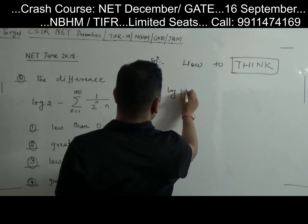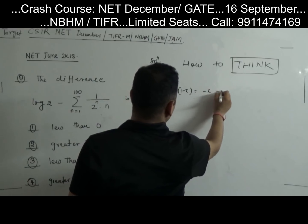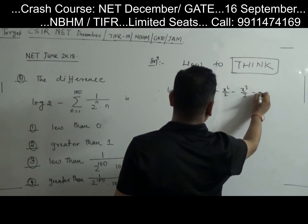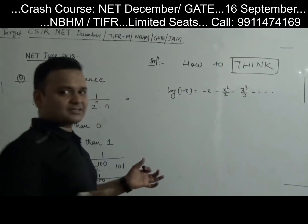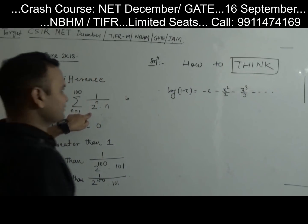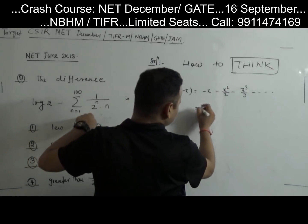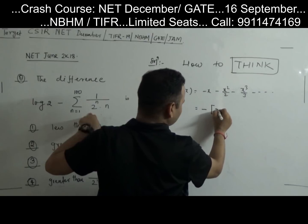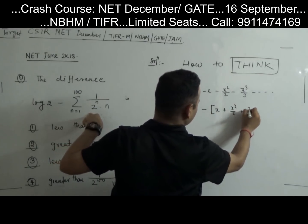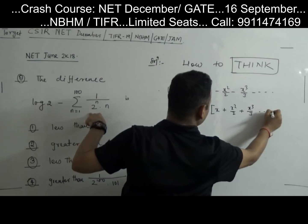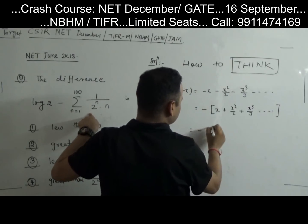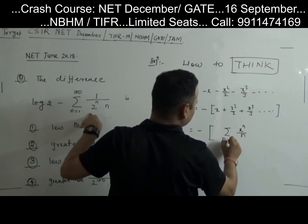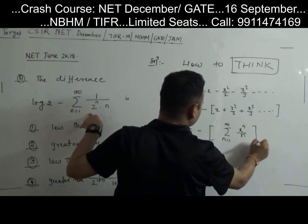So log(1−x) equals minus x minus x²/2 minus x³/3 and so forth. Now take minus common. What do you get? x plus x²/2 plus x³/3 and so on. This is the sum of x^n by n, n from 1 to infinity.